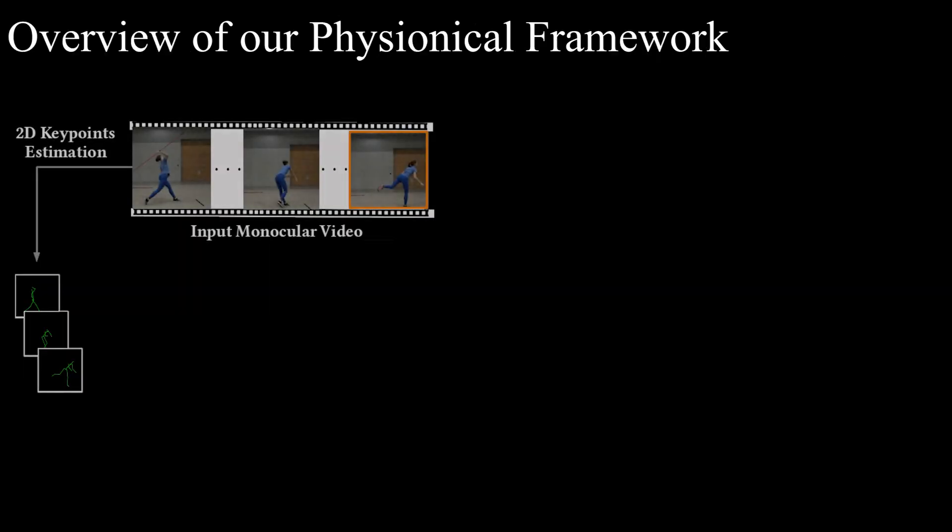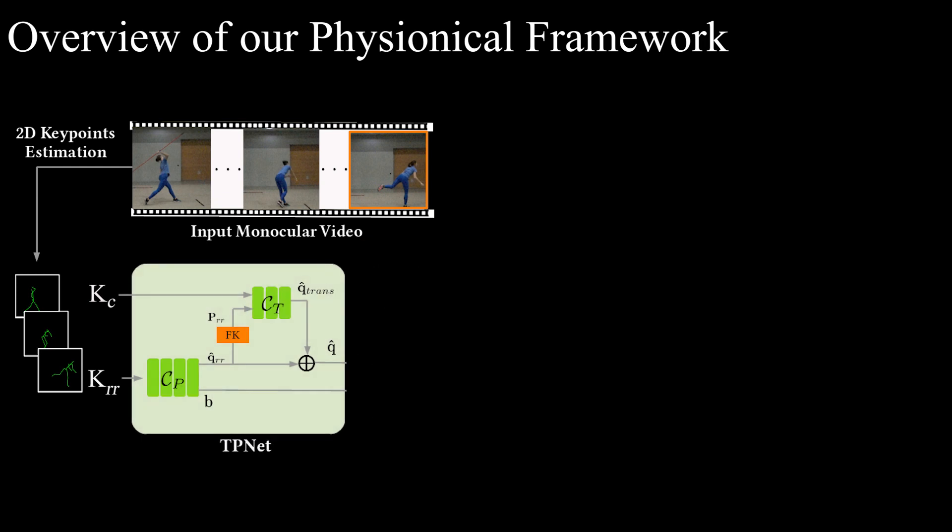We next explain our physionical framework in detail. First, 2D joint keypoints are estimated from the input video with an off-the-shelf 2D keypoint detector. After applying two different keypoint normalizations, they are passed to the target pose net, or TP net, which returns the target pose of a neural PD controller, Q hat, and foot contact state for the observed scene, B.